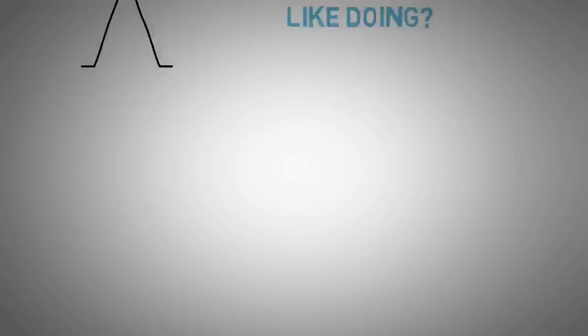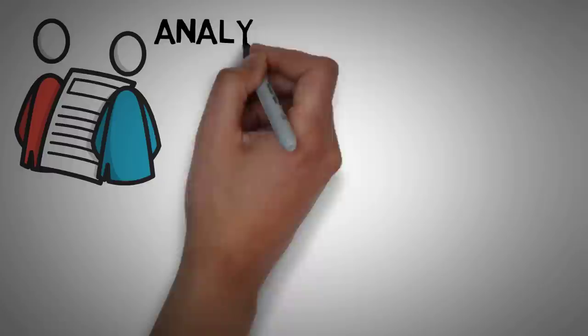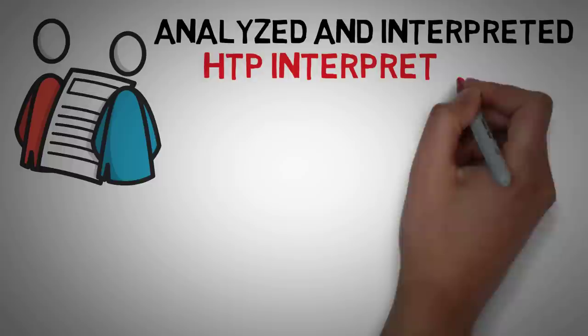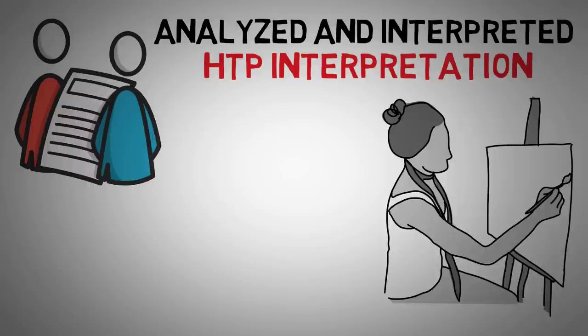After the respondents have answered these questions, their drawings are analyzed and interpreted. The interpretation is probably the most important part. The House Tree Person Test is based on the idea that drawings reflect feelings. The details of a drawing are seen as representations of various personality traits.